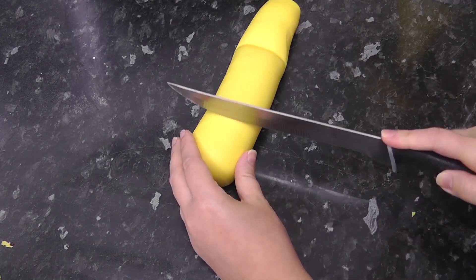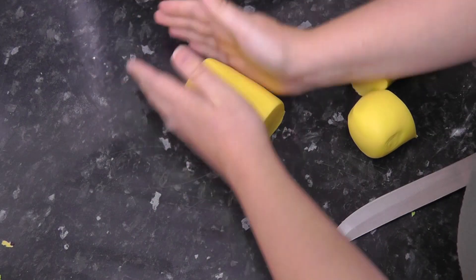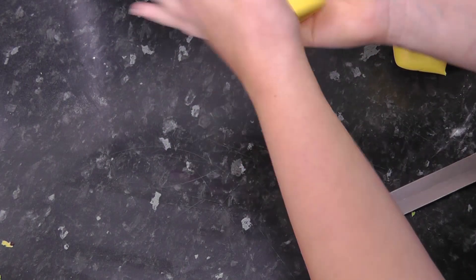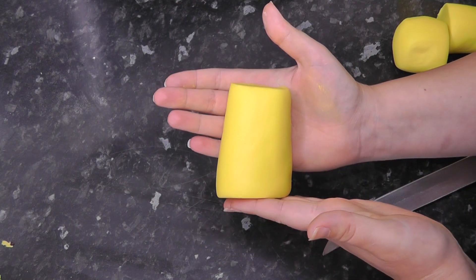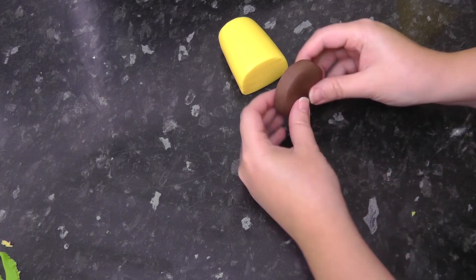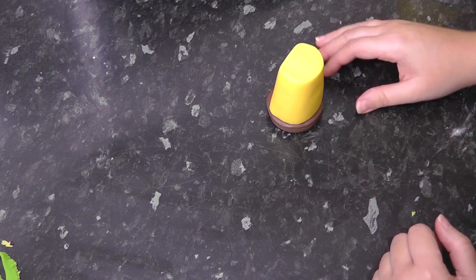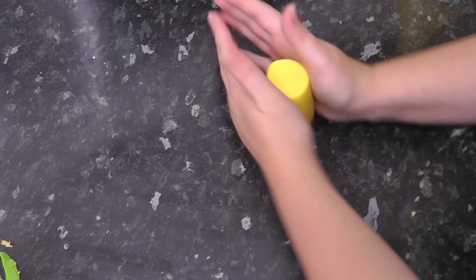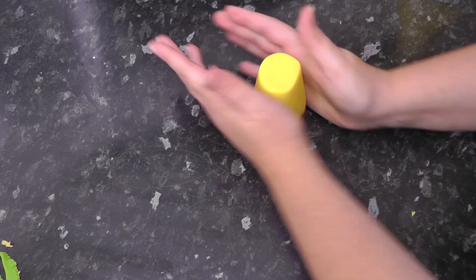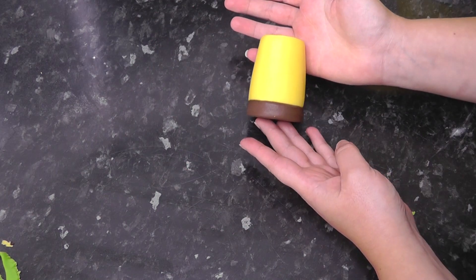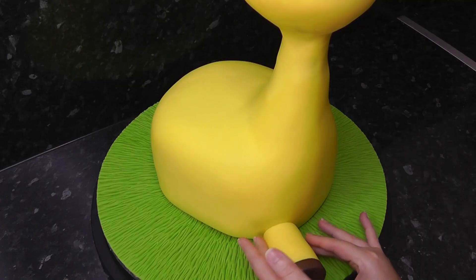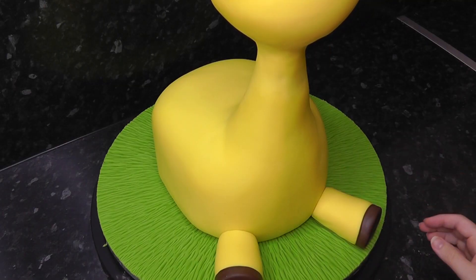The legs are made by rolling a really big chunky sausage of paste and tapering one end a little larger than the other. Cut out a brown disc the same size as the larger end of the leg, place it on top, and then roll it between your hands to make it more uniform. Stick two legs at the front of the giraffe and two behind.